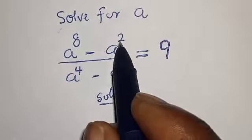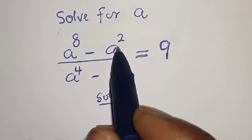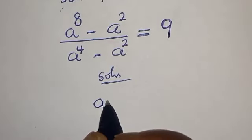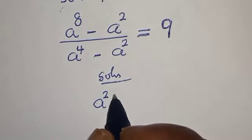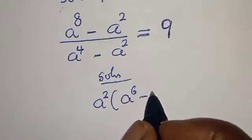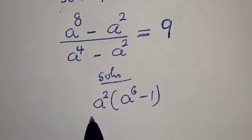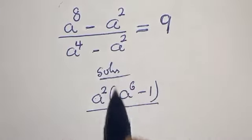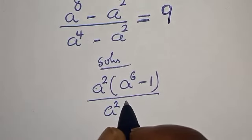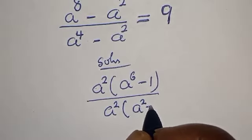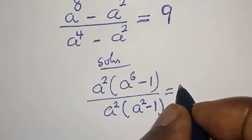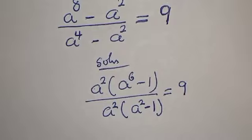We have a squared here and here. Let's bring a squared out — this becomes a squared bracket a raised to power 6 minus 1, divided by a squared bracket a squared minus 1, is equal to 9.